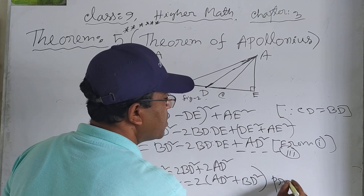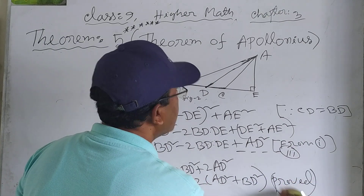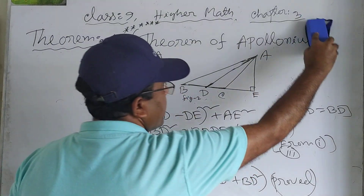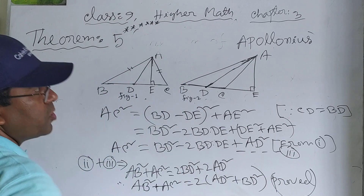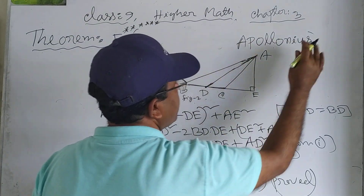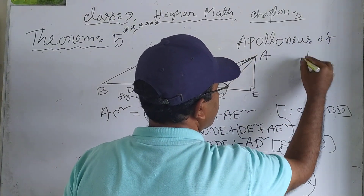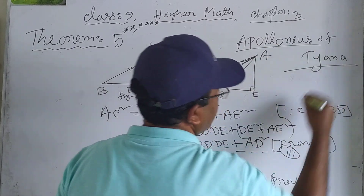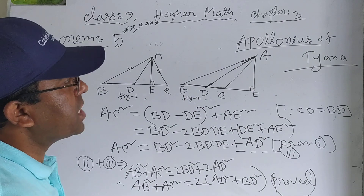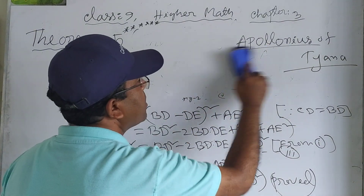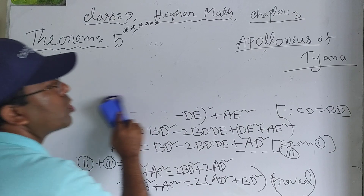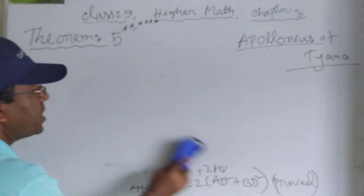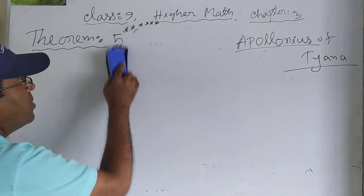So AB² + AC² = 2(AD² + BD²). This proves Apollonius theorem. I will show you the next one. Thank you. Follow us.